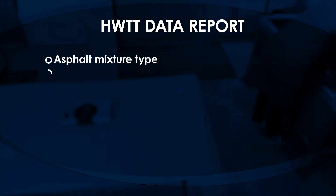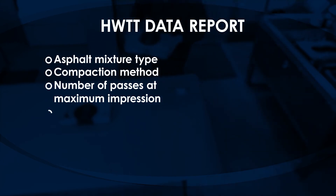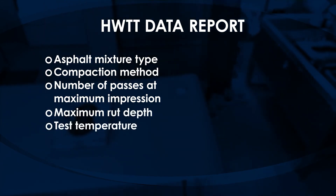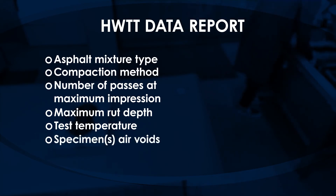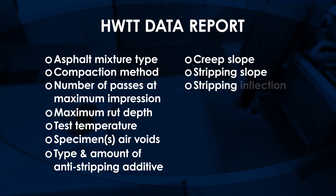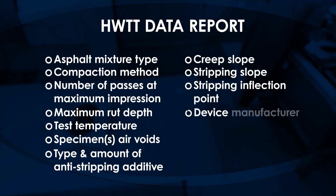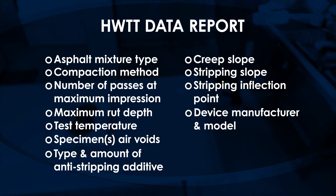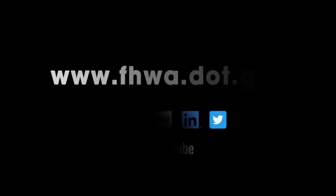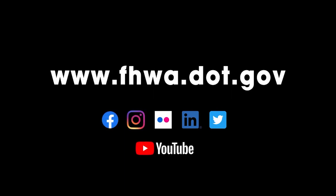A Hamburg wheel track test data report may include the following parameters: asphalt mixture type, compaction method if applicable, number of passes at maximum impression, maximum rut depth, test temperature, specimen air voids, type and amount of anti-stripping additive used, creep slope, stripping slope, stripping inflection point, and device manufacturer and model. For more information about asphalt testing procedures or other pavement testing resources, visit fhwa.dot.gov.